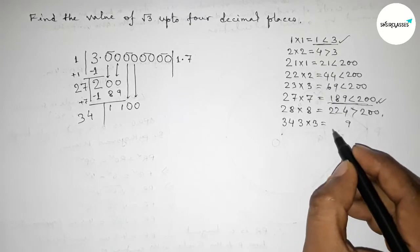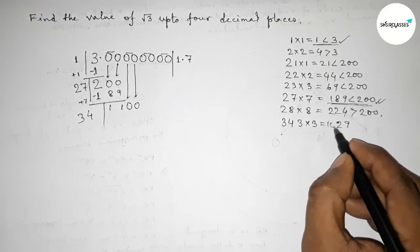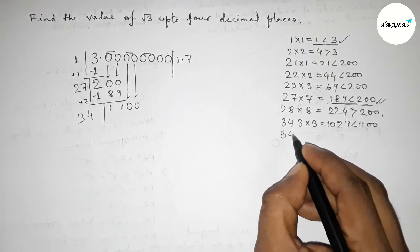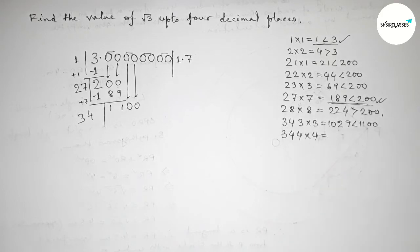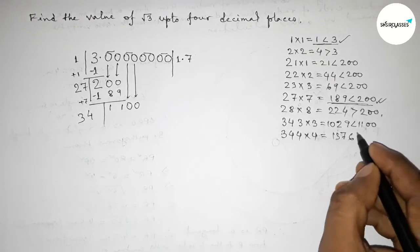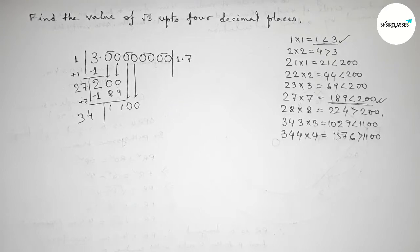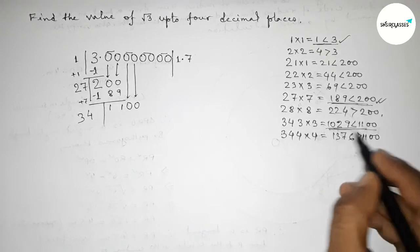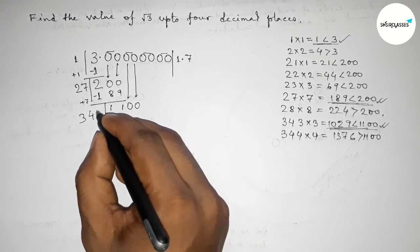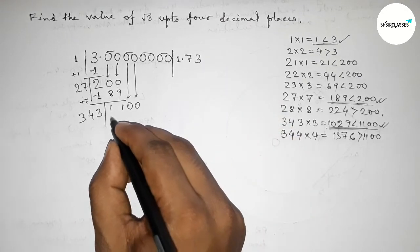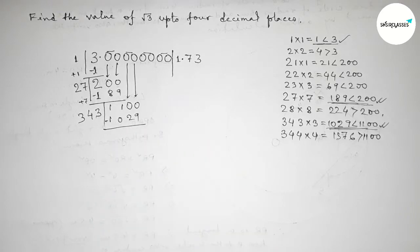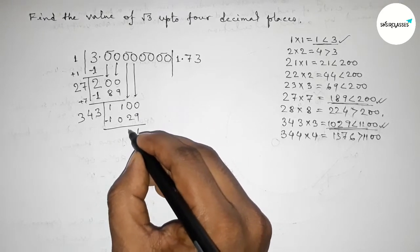343 × 3 = 1029, which is less than 1100. If you take 4, then 344 × 4 = 1376, which is greater than 1100. So we take 3 since 1029 is less than and almost near to 1100. Write 3 and write down 1029. Subtracting gives remainder 71.